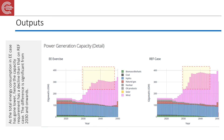In this illustration, you can see a comparison of power generation capacity between the energy efficiency case and the reference case. As the total energy consumption in the energy efficiency case has gone lower, the capacity requirement has also declined compared to the reference case. The difference is significant starting from the year 2030.